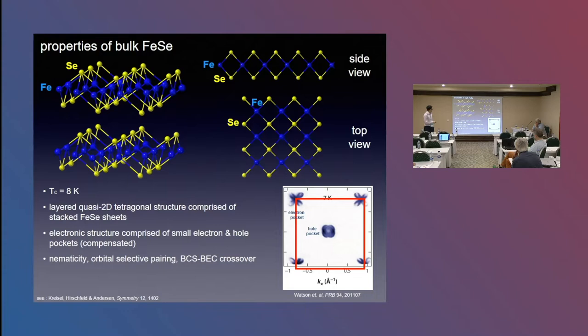The electronic structure is comprised of electron and compensated electron hole pockets, and it's actually a very interesting system in and of itself in bulk. It exhibits nematicity, orbital selective pairing, all kinds of interesting physics. There's a very nice review article by Peter Hirschfeld if you're interested in that system. I'm not going to spend too much time on these particular aspects.